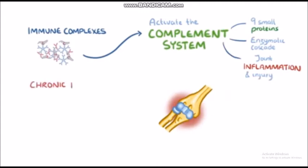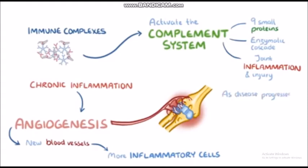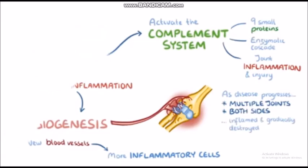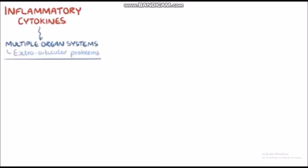Finally, the chronic inflammation causes angiogenesis, or the formation of new blood vessels around the joint, which allows even more inflammatory cells to arrive. As the disease progresses, multiple joints on both sides of the body get inflamed and gradually destroyed. These inflammatory cytokines don't just stay within the joint space — they escape through the bloodstream and reach multiple organ systems, causing extra-articular problems, meaning problems beyond the joint space.